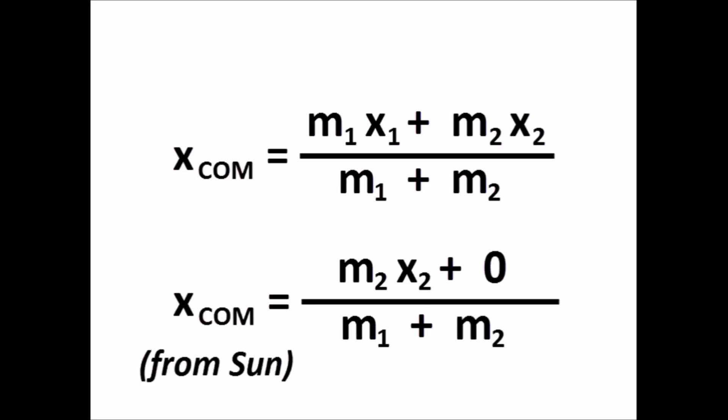So let's say we want to know where the center of mass of the Earth and Sun system is, and we take distances from the Sun. X1 in the formula is the distance to the Sun, from the Sun. It is zero. That simplifies the formula a bit.